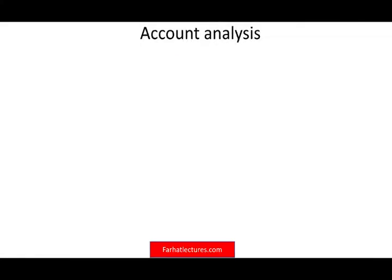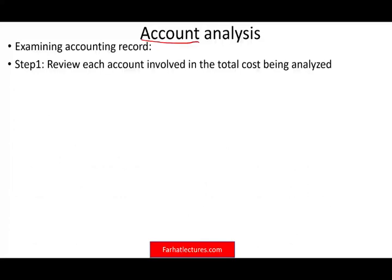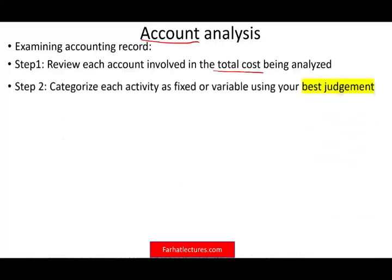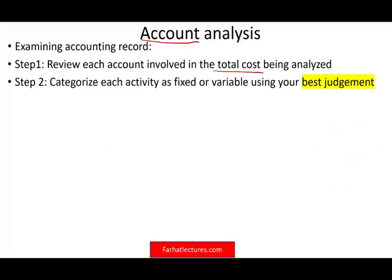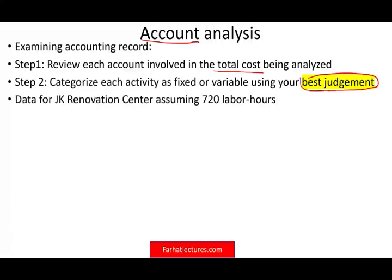The second method is account analysis, which means we are using accounting records by examining the accounts. Step one is to review each account involved in total cost. We're using historical data. Then we categorize each activity as either fixed or variable using our best judgment, because it can be difficult to determine whether something is a fixed or variable cost — sometimes costs are mixed.